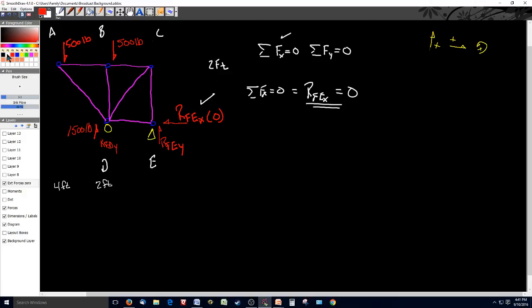So going back to our y direction, now I'm going to say the summation of my forces in the y direction have to equal zero also. So what do I have in the y direction? Remember my convention: up is positive, down is negative. So we're going to deal in up and down for the y direction.